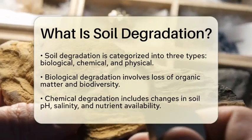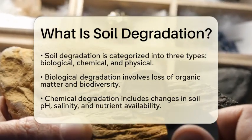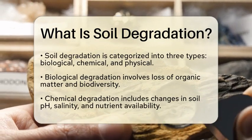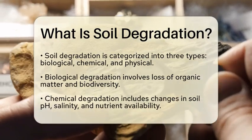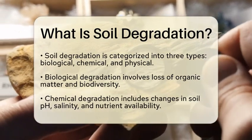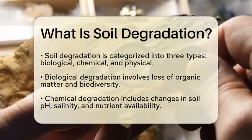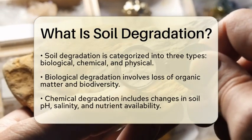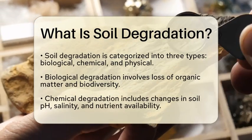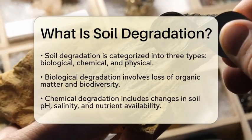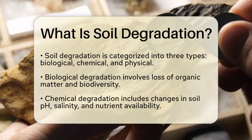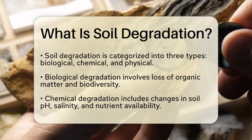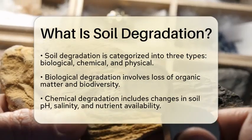Chemical degradation refers to changes in soil pH, salinity, and nutrient availability. For instance, soil acidification or salinization can make the soil less suitable for plant growth. This is particularly concerning for farmers who rely on healthy soil for their crops.